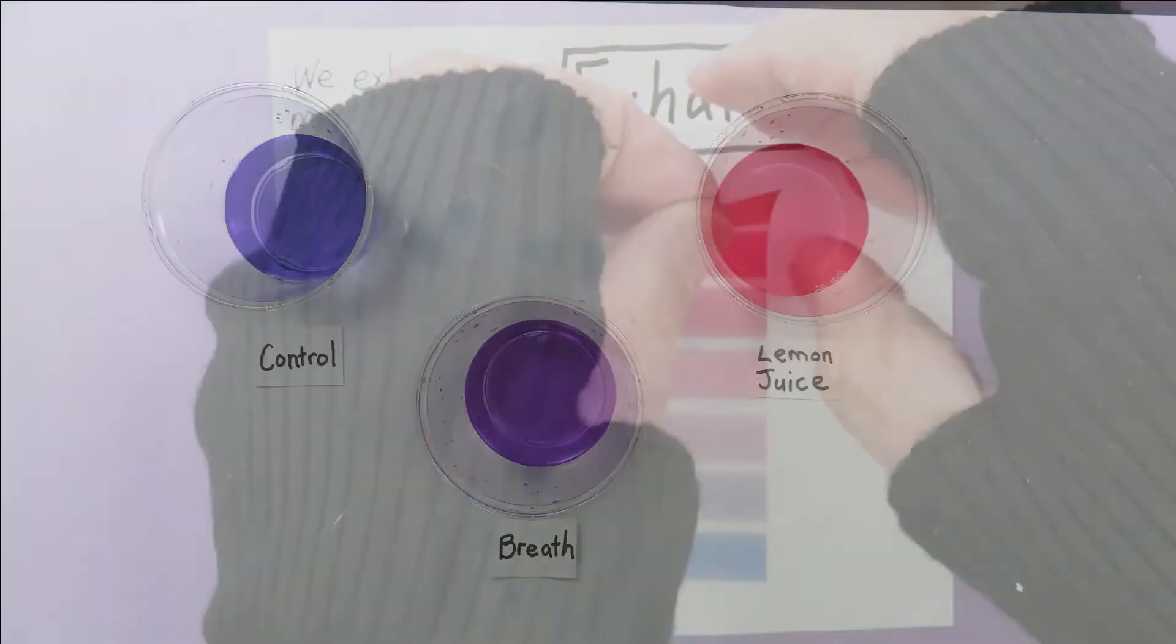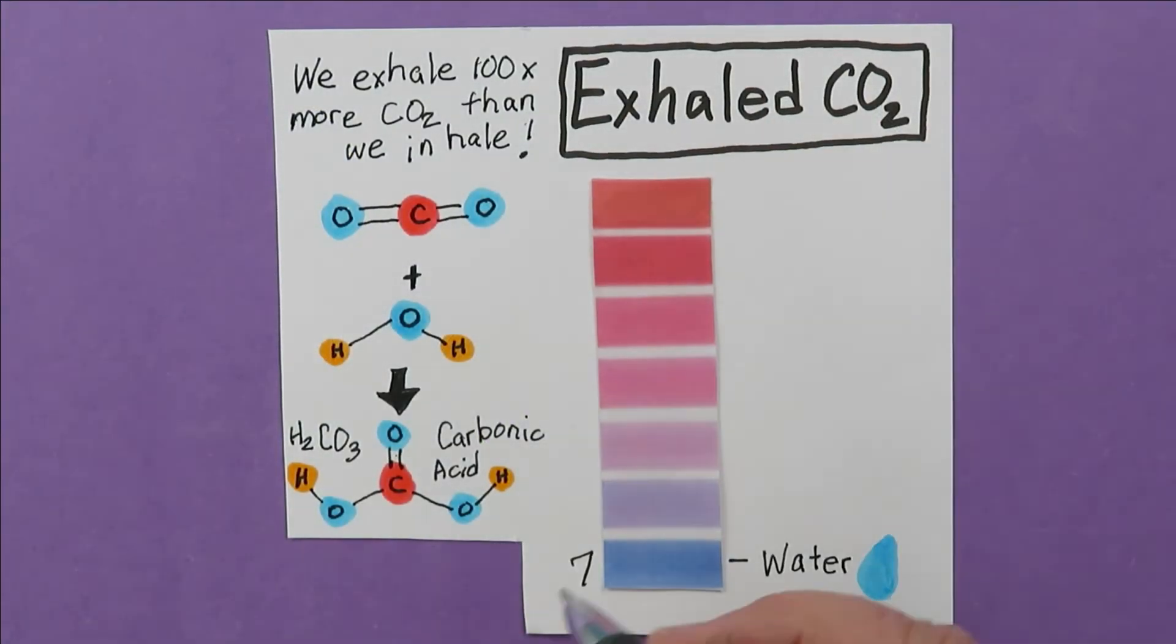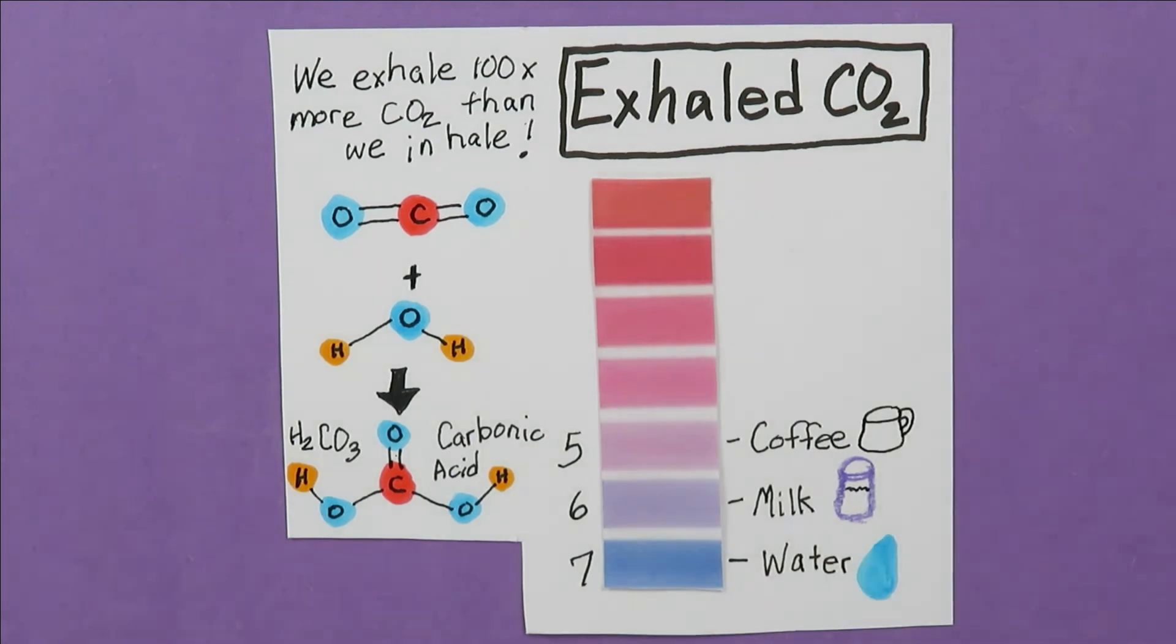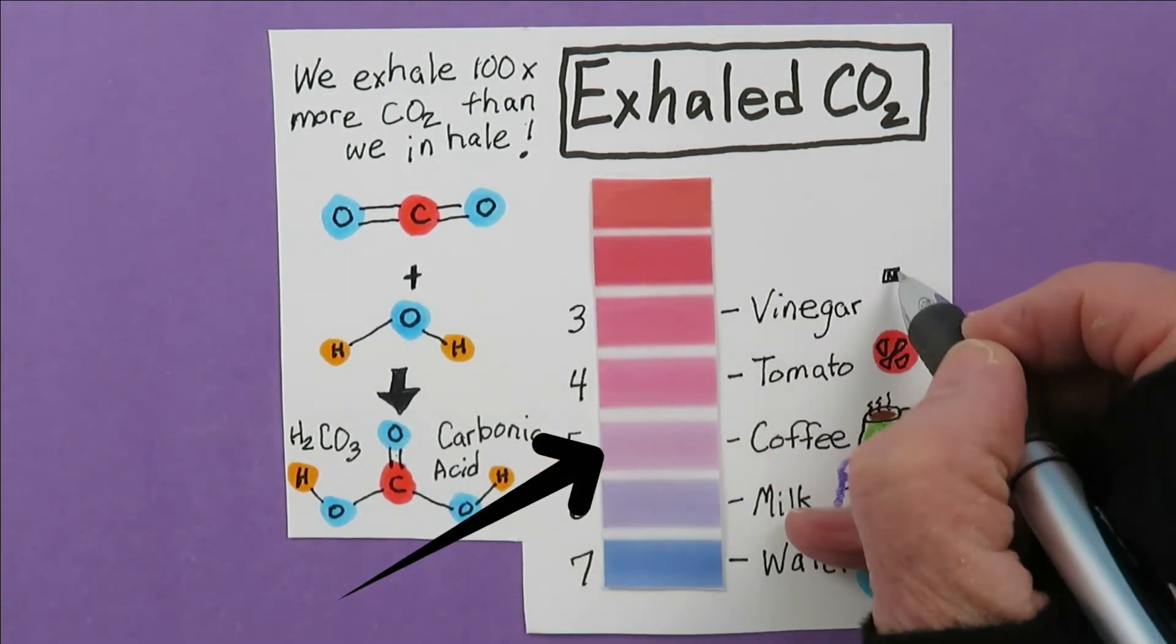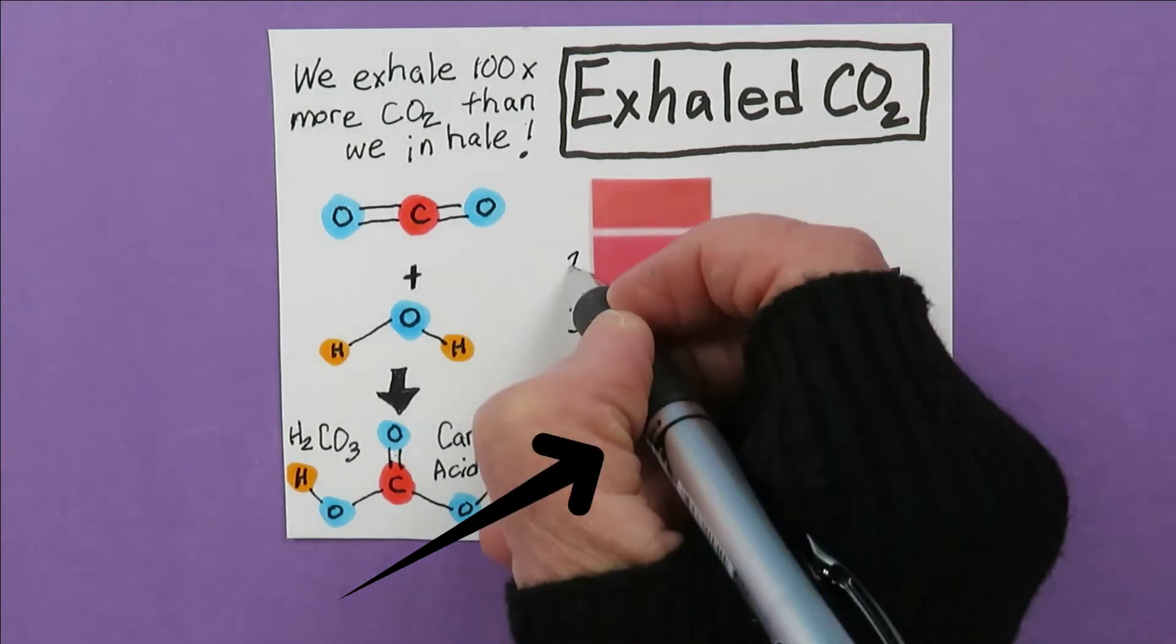Check it out on the pH scale. Water is neutral, about 7 on the pH scale. Lemon juice, a strong acid, at about 2 on the pH scale. Our carbonic acid is about 5.7. But don't panic.